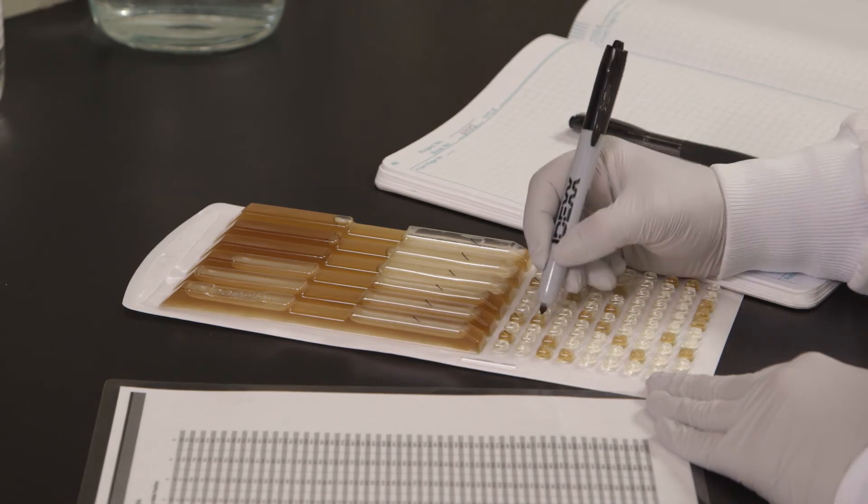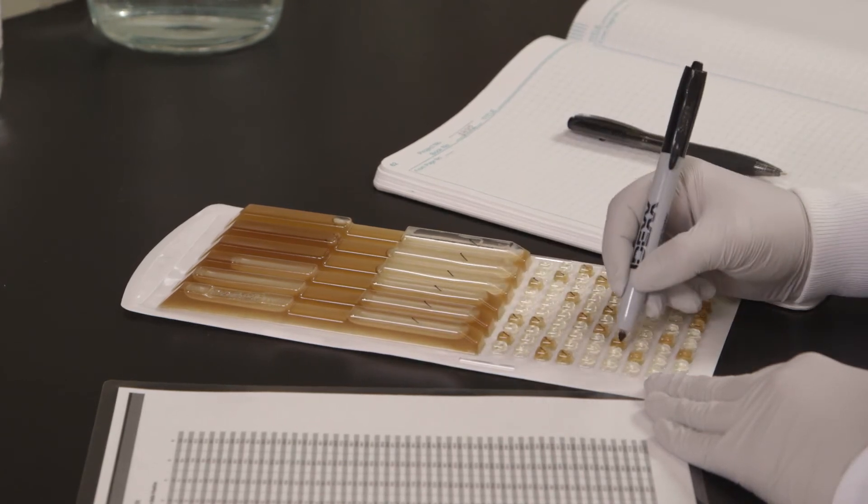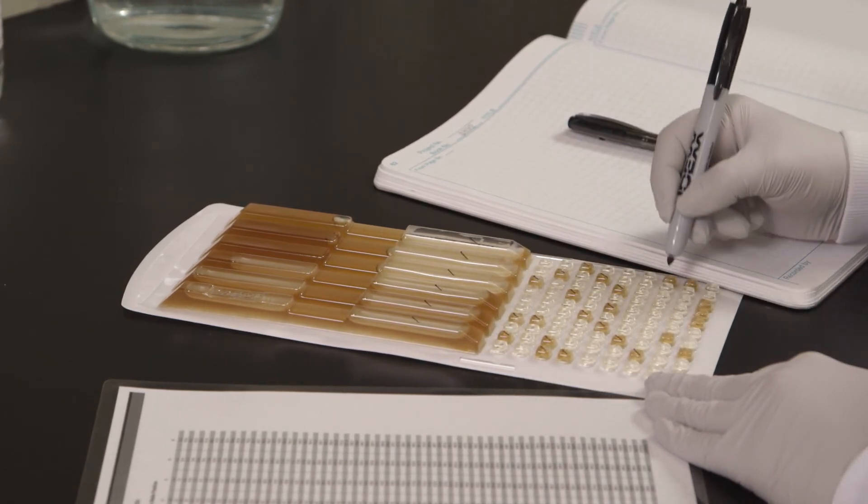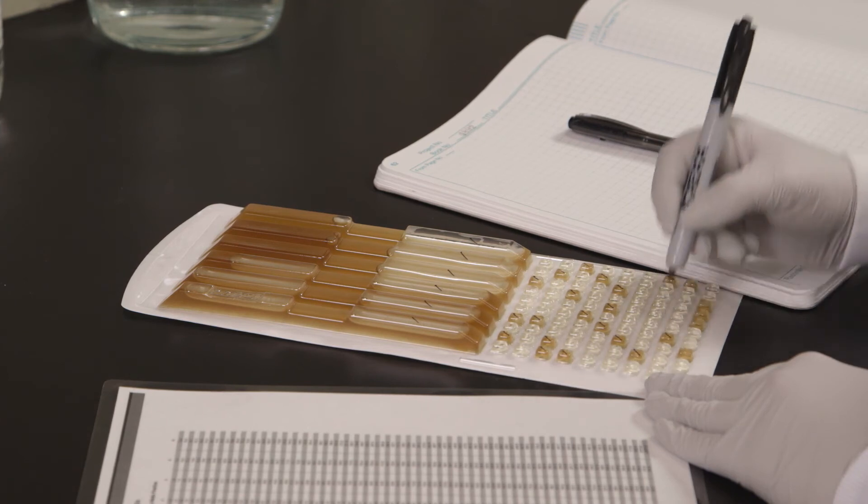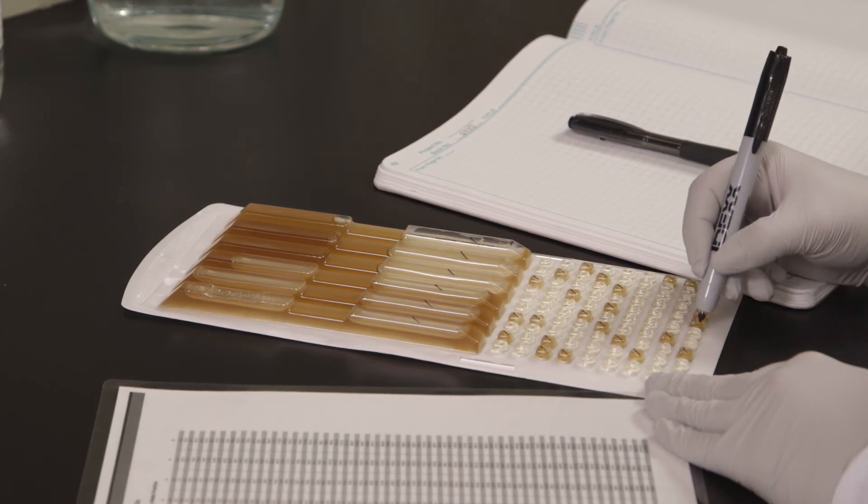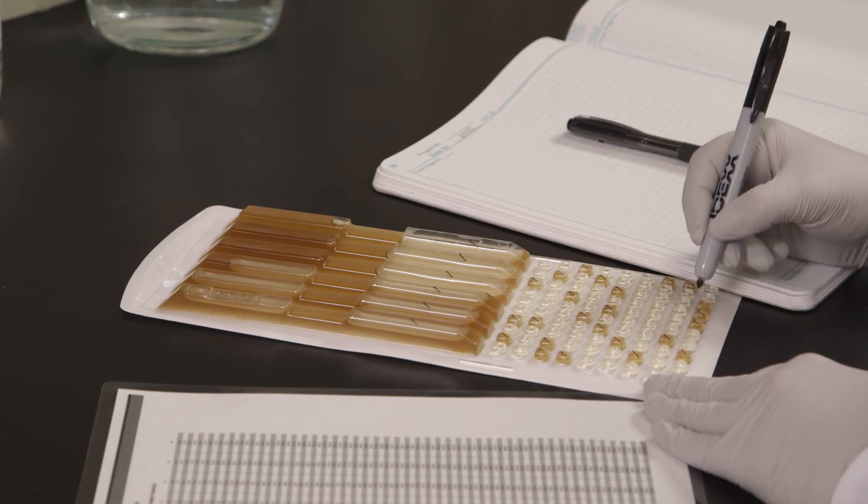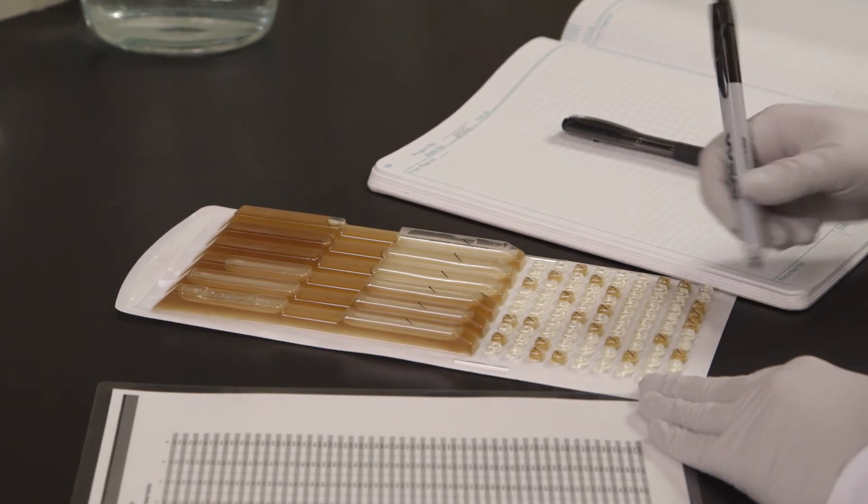Mark each brown or turbid well, count the marked wells, and then refer to the MPN table included with the Quantitray LEG-ALERT trays. Remember to multiply the MPN number by 10 because you are using a diluted sample.